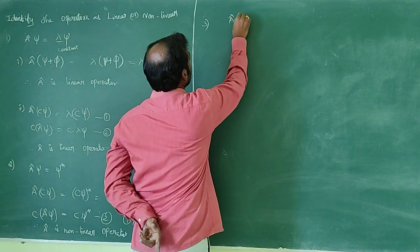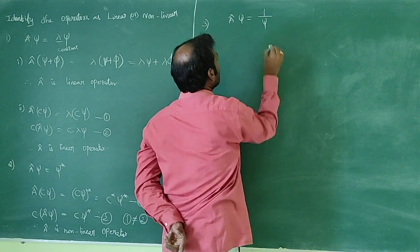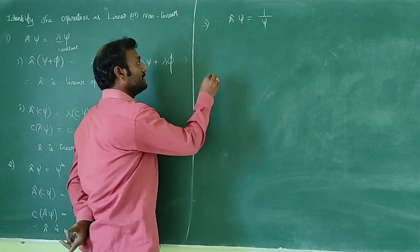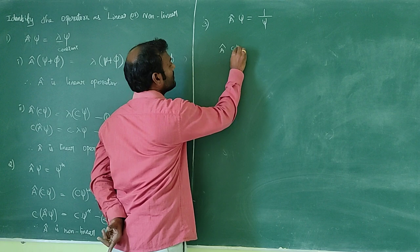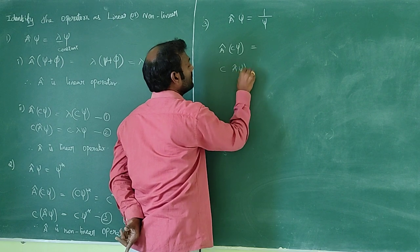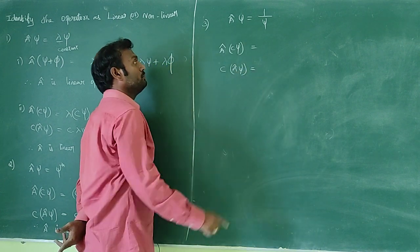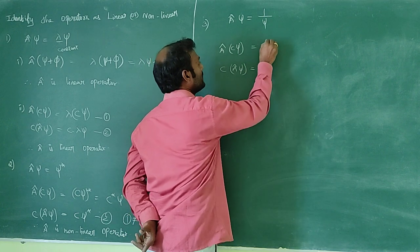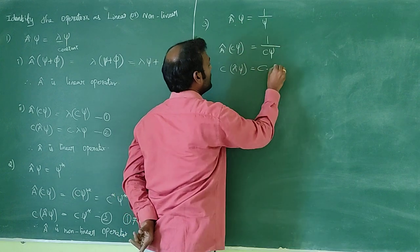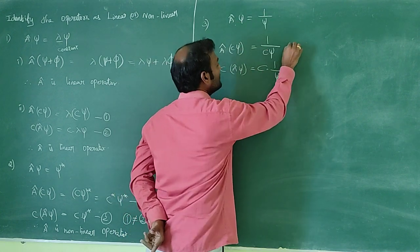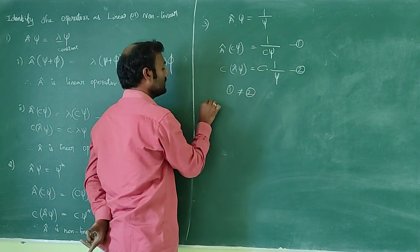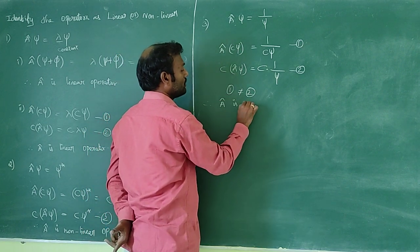Third example: A-cap(ψ) equals 1/ψ (inverse). Applying the linearity condition and operating, the result shows that the constant terms do not match the required form. Hence A-cap is a non-linear operator.